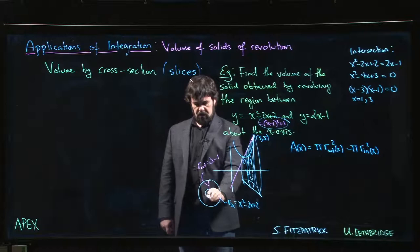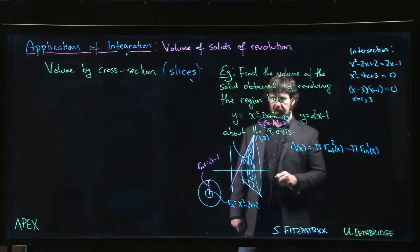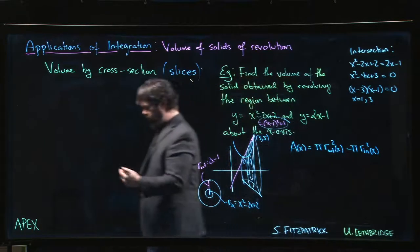And so what we do is we take the outer disc, we subtract off the area of the inner disc, which gives us an area like that. Once we have the area as a function of x, we can integrate with respect to x to get the volume.